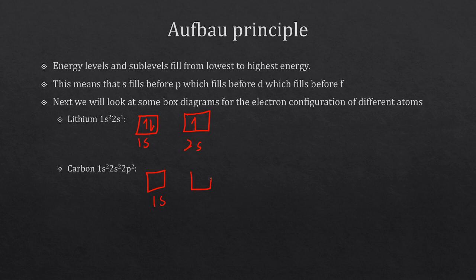For carbon, it's going to have one box which is 1s, another box which is 2s, and then when we get to 2p we need three boxes. We went to 2s before 2p, and I've got two more electrons, so I put one up here and one up here.